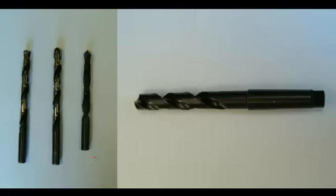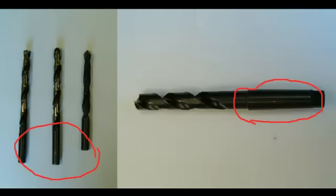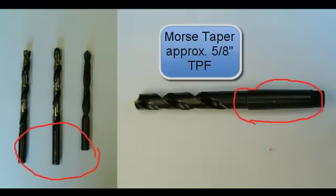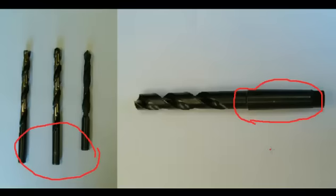Drill bits up to half inch in diameter will typically have a straight shank, which is held in the drill chuck. Drill bits over half inch in diameter will typically have a tapered shank. A very common tapered shank is the Morse taper, M-O-R-S-E. And it is approximately 5/8 inch taper per foot. And it is meant to go directly into the spindle of the drill press.